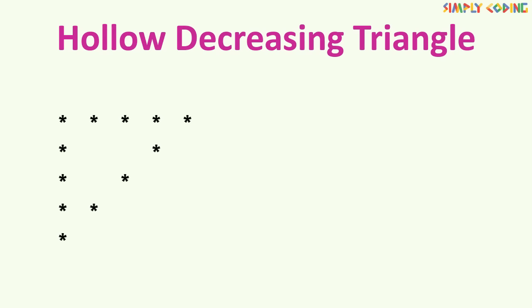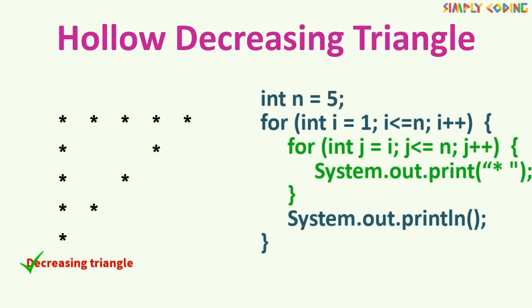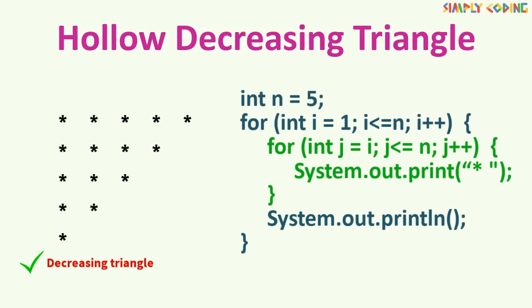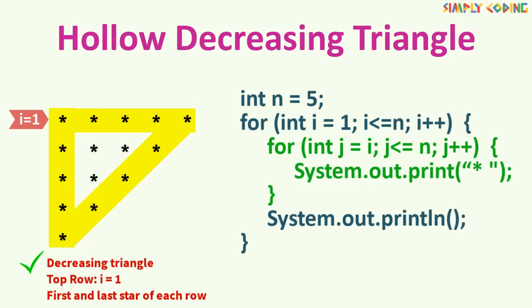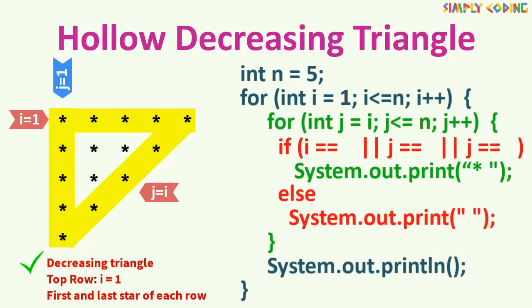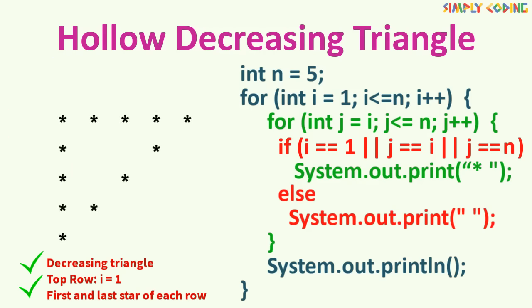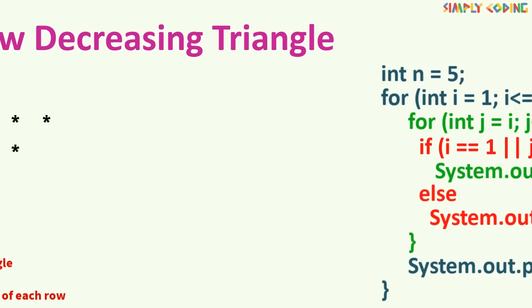Let's try the same for the hollow decreasing triangle pattern. We take the solid decreasing triangle code where the outer loop runs from 1 to n and the inner loop runs from i to n. Here we want the top row and the starting and ending star of each row. The j loop gives the starting and ending conditions, so we add an if condition for the first row where i equals 1, and j equals i (starting star) and j equals n (ending star). Running this gives the hollow decreasing triangle.